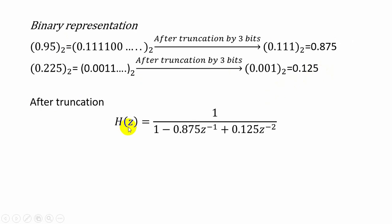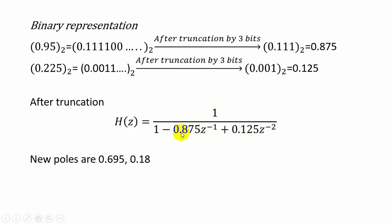So the transfer function is replaced as 1 by 1 minus 0.875 z-inverse plus 0.125 z to the power minus 2. When you are finding the roots of this denominator we will get 0.695 and 0.18. So these two are considered to be the new poles.